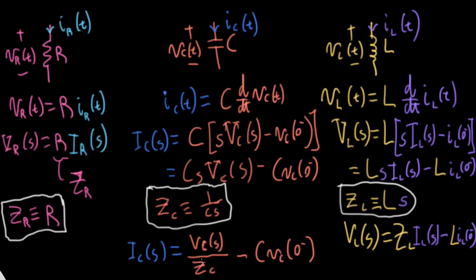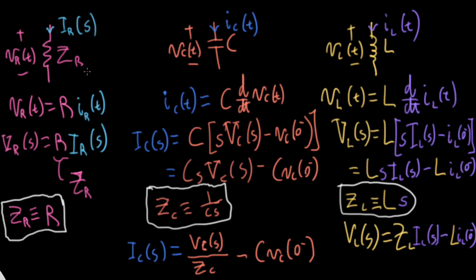My goal is to take these circuits in the time domain and write down equivalent circuit models in the Laplace domain. This is going to be pretty easy to do for the resistor. All I really need to do is replace R with Z sub R, replace the current in the time domain with the current in the Laplace domain, and replace the voltage in the time domain with the voltage in the Laplace domain. So the schematic doesn't really change much — nothing very interesting happened there.